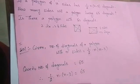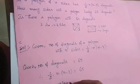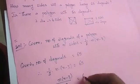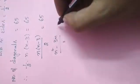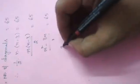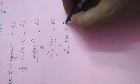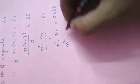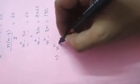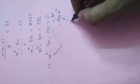So n(n-3)/2 = 65, which gives n² - 3n = 2 × 65 = 130. Therefore n² - 3n - 130 = 0. Now we factor this quadratic — we need two numbers that multiply to -130 and add to -3.